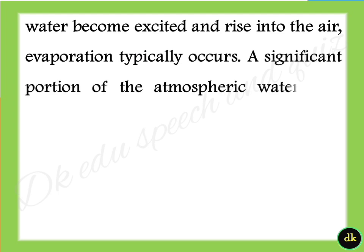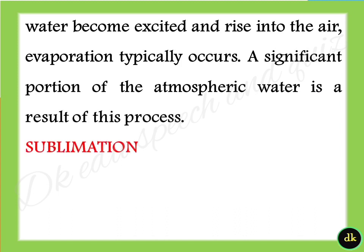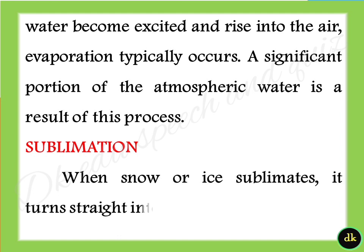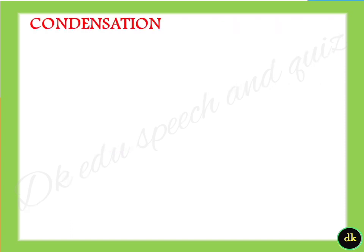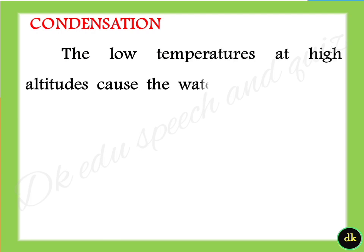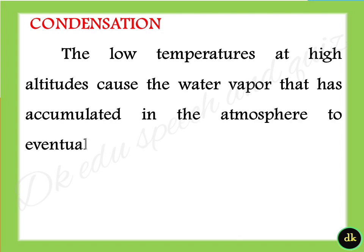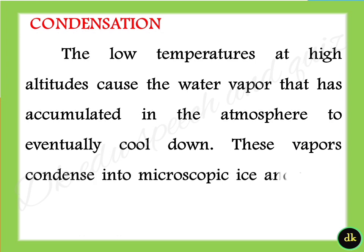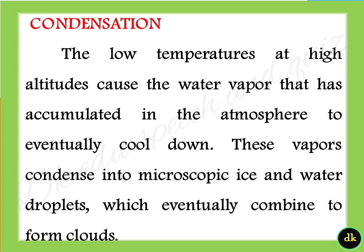A significant portion of atmospheric water is a result of sublimation. When snow or ice sublimates, it turns straight into water vapor. Condensation: the low temperatures at high altitude cause water vapor accumulated in the atmosphere to eventually cool down. This vapor condenses into microscopic ice and water droplets, which eventually combine to form clouds.